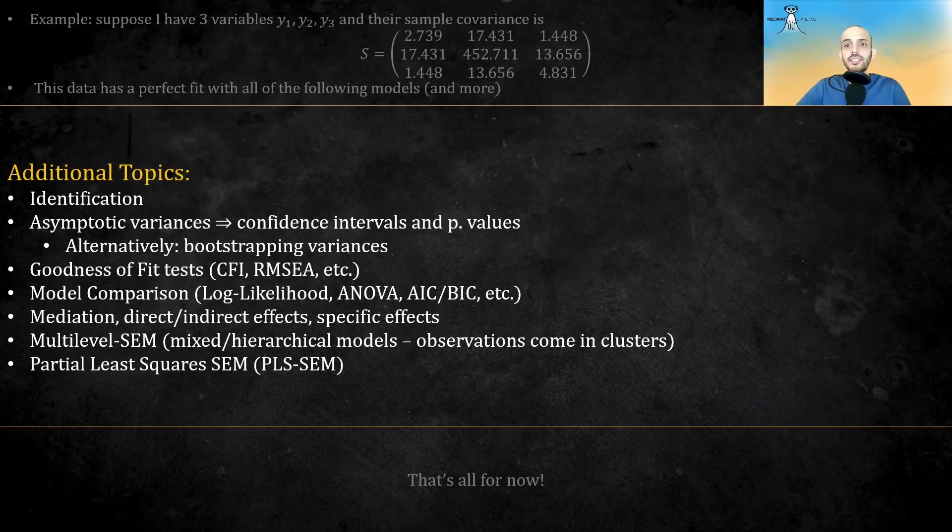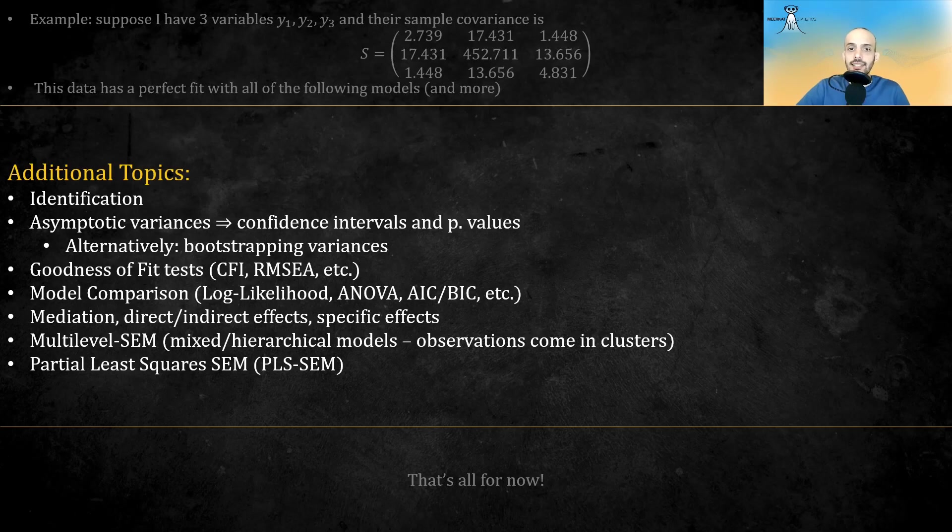Now, there are additional topics which I won't cover in this video, but just briefly mention. So like CFA, there's the issue of identifiability. We want to have one solution and not many different and contradictory solutions for the coefficients. There are also ways to get confidence intervals over our coefficients estimates, either asymptotic ones or by using bootstrapping techniques. There are tests to tell the overall goodness of fit and to compare different models. There are ways to test mediator variables or mediator effects, distinct between direct and indirect effects, and test whether a specific effect is significant. There is also something called multilevel SEM, also known as mixed or hierarchical model, where the observations come in clusters. And finally, there's also the ability to do SEM using partial least squares.